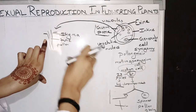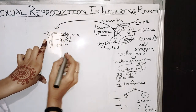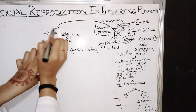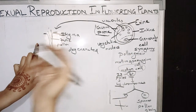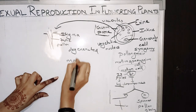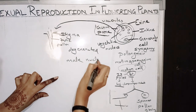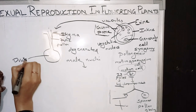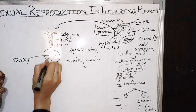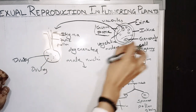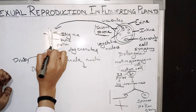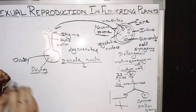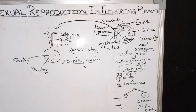And in this pollen tube, the vegetative nucleus transfers and degenerates. This generative cell also transfers here and divides mitotically again, forming two male nuclei, which later fuse to the ovary. In the ovary there is presence of ovules. So the generative cell is transferred here, forms two male nuclei, and these two male nuclei fuse with the ovules and form a zygote.